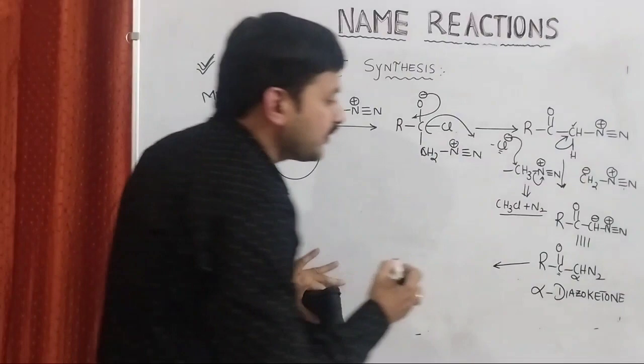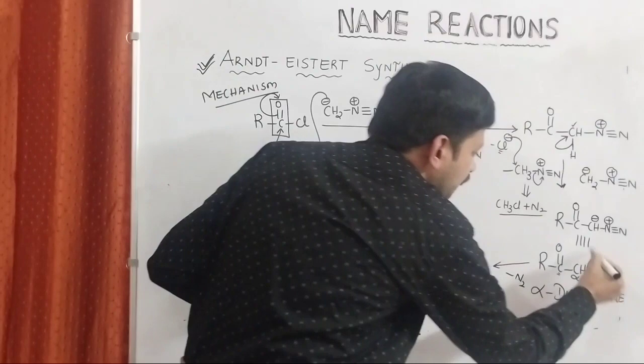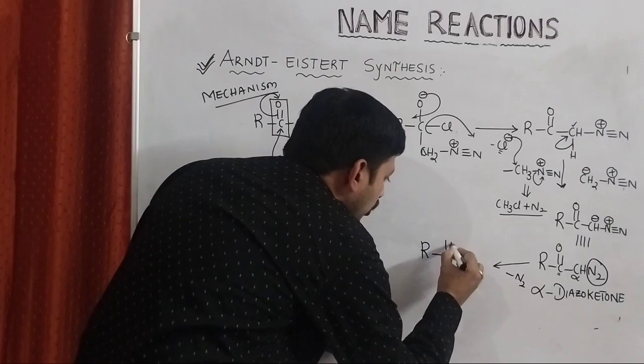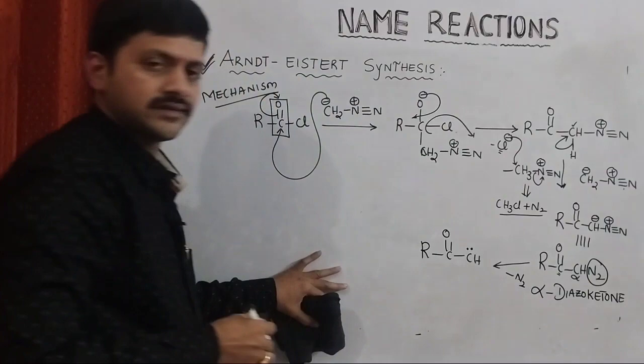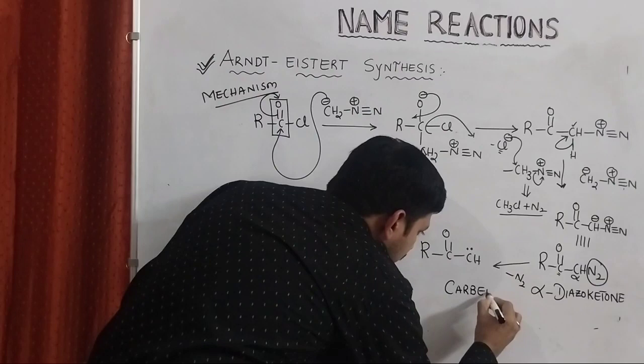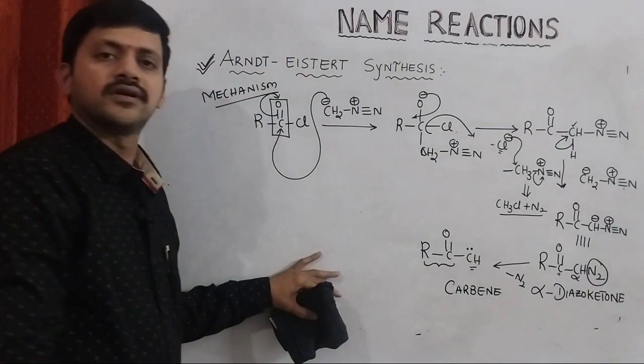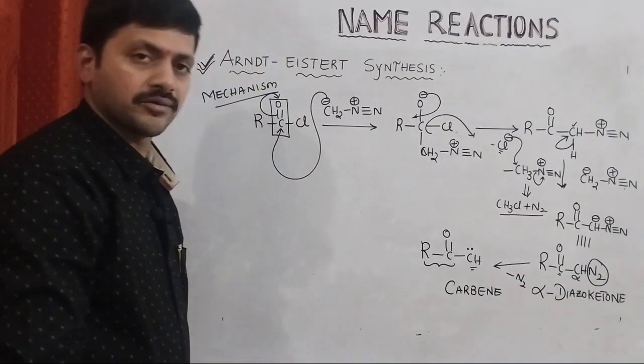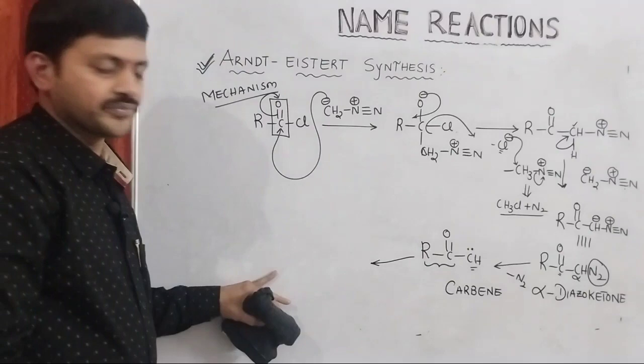The alpha diazo ketone is subjected to further heating. What will happen? The elimination of the N2 molecule takes place. This generates an intermediate commonly called acylcarbene. Nitrogen is removed and the carbon gets a lone pair. This intermediate is commonly called acylcarbene — this group has carbene nature, that is why it is called acylcarbene. The acylcarbene is then involved in a rearrangement.